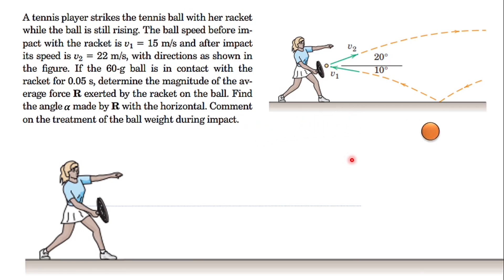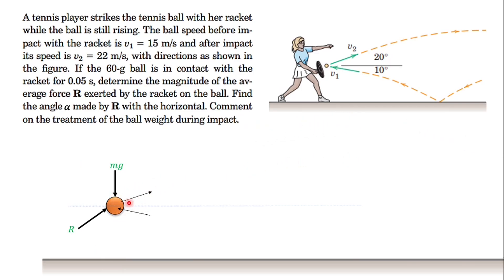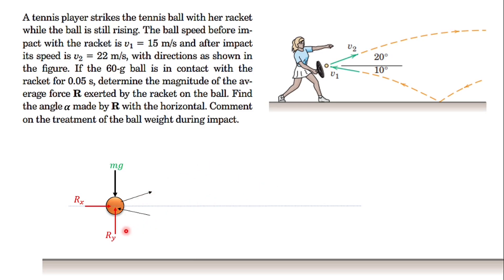When she strikes with her racket, she applies an average force R. The ball has its own weight toward the negative y direction. The R component can be decomposed into Rx and Ry. Once she applies this force, the ball projects in the direction of 20 degrees from the horizontal. We'll solve for the average force and the angle it makes with the horizontal x-axis.